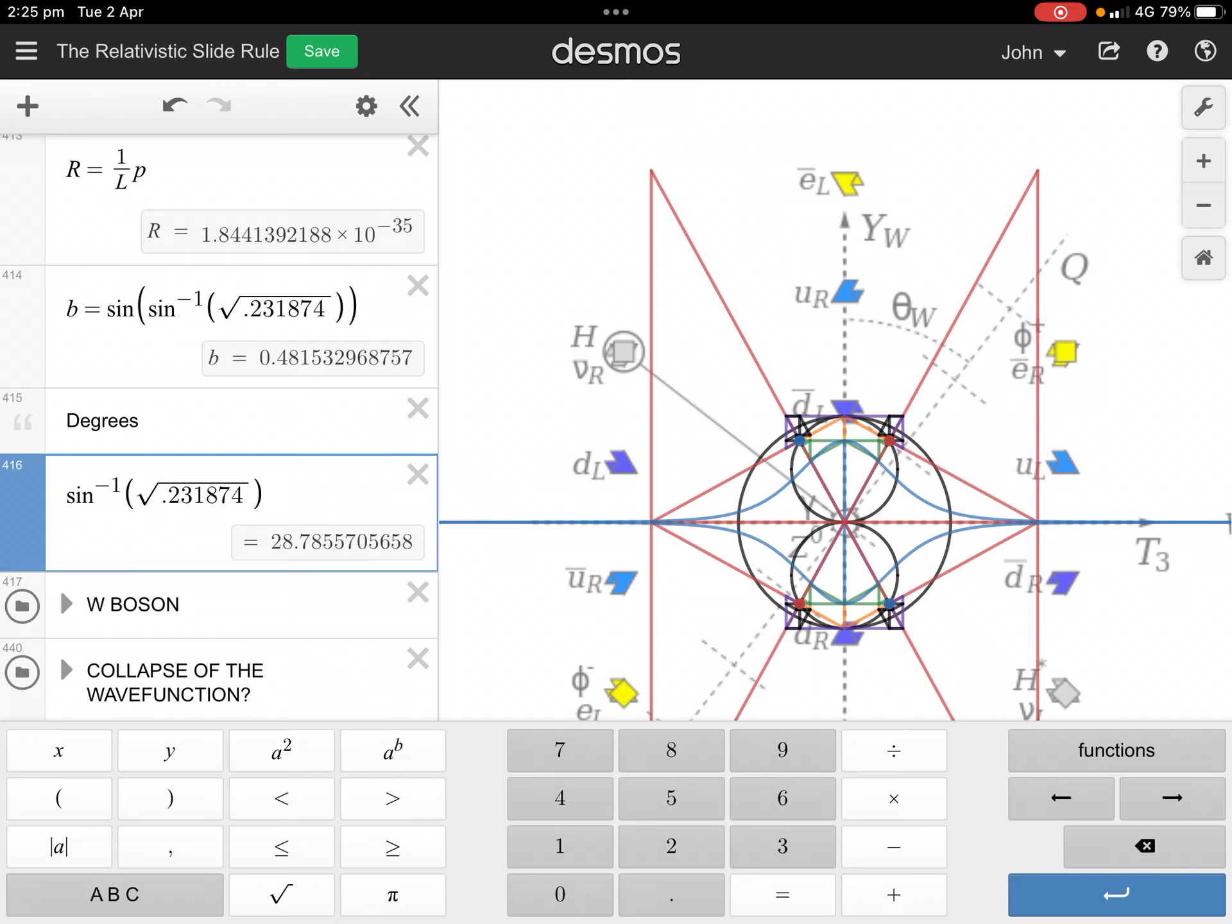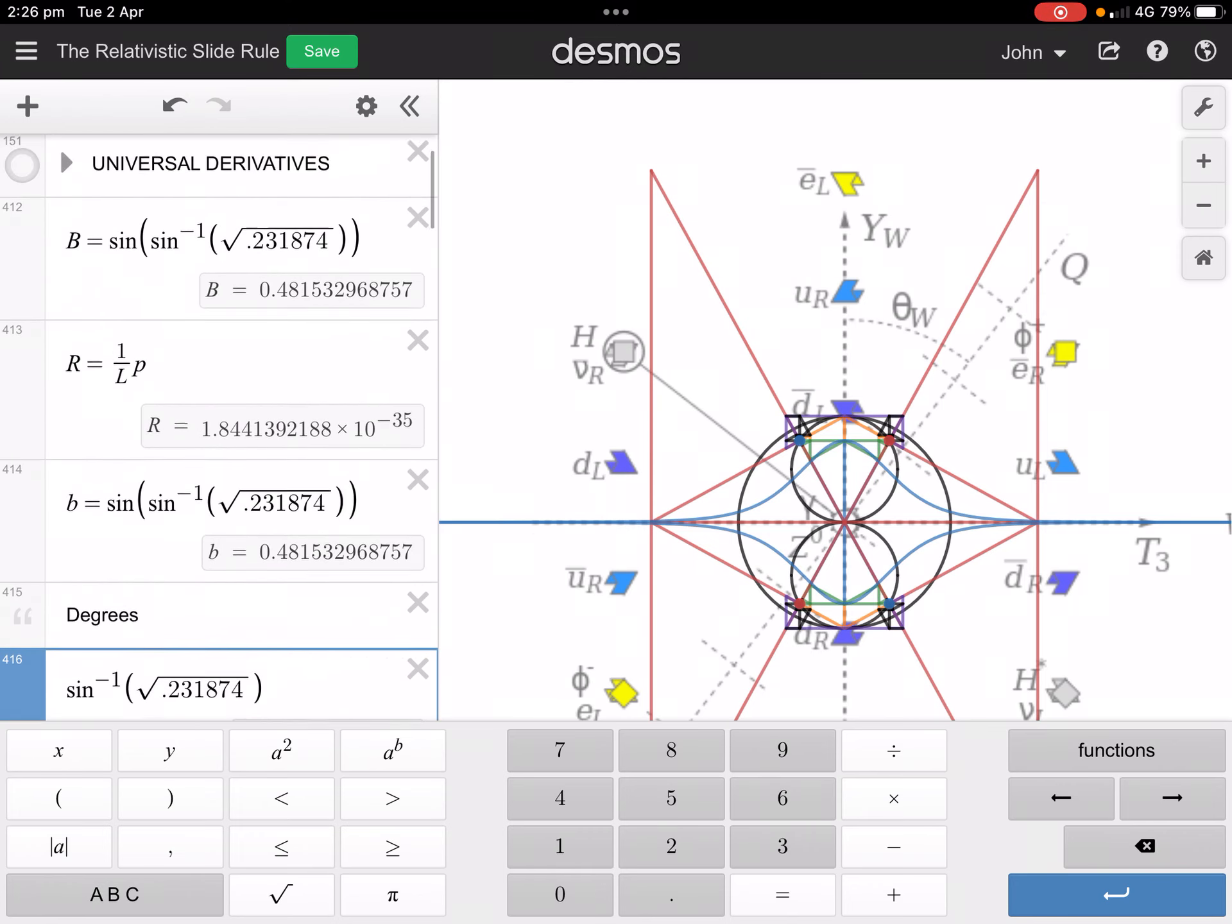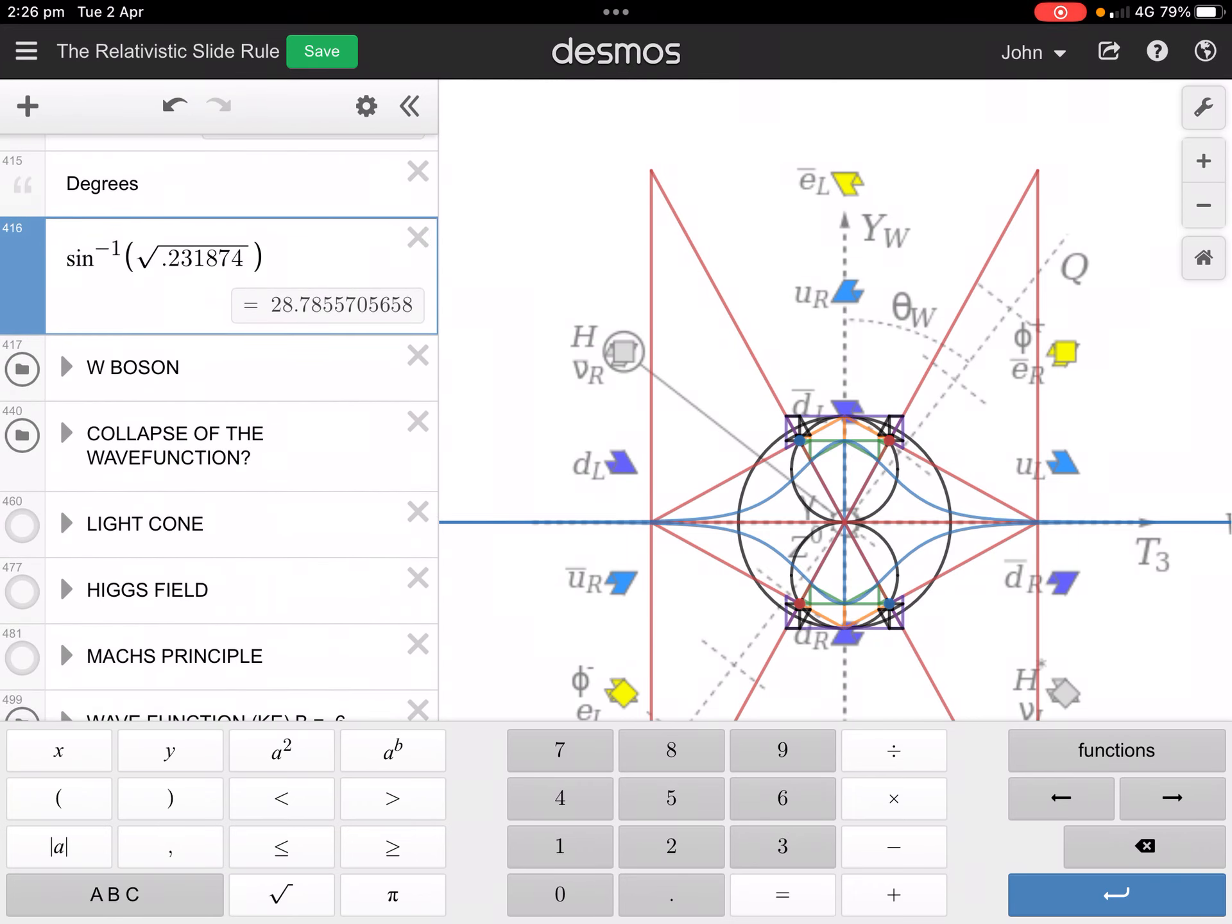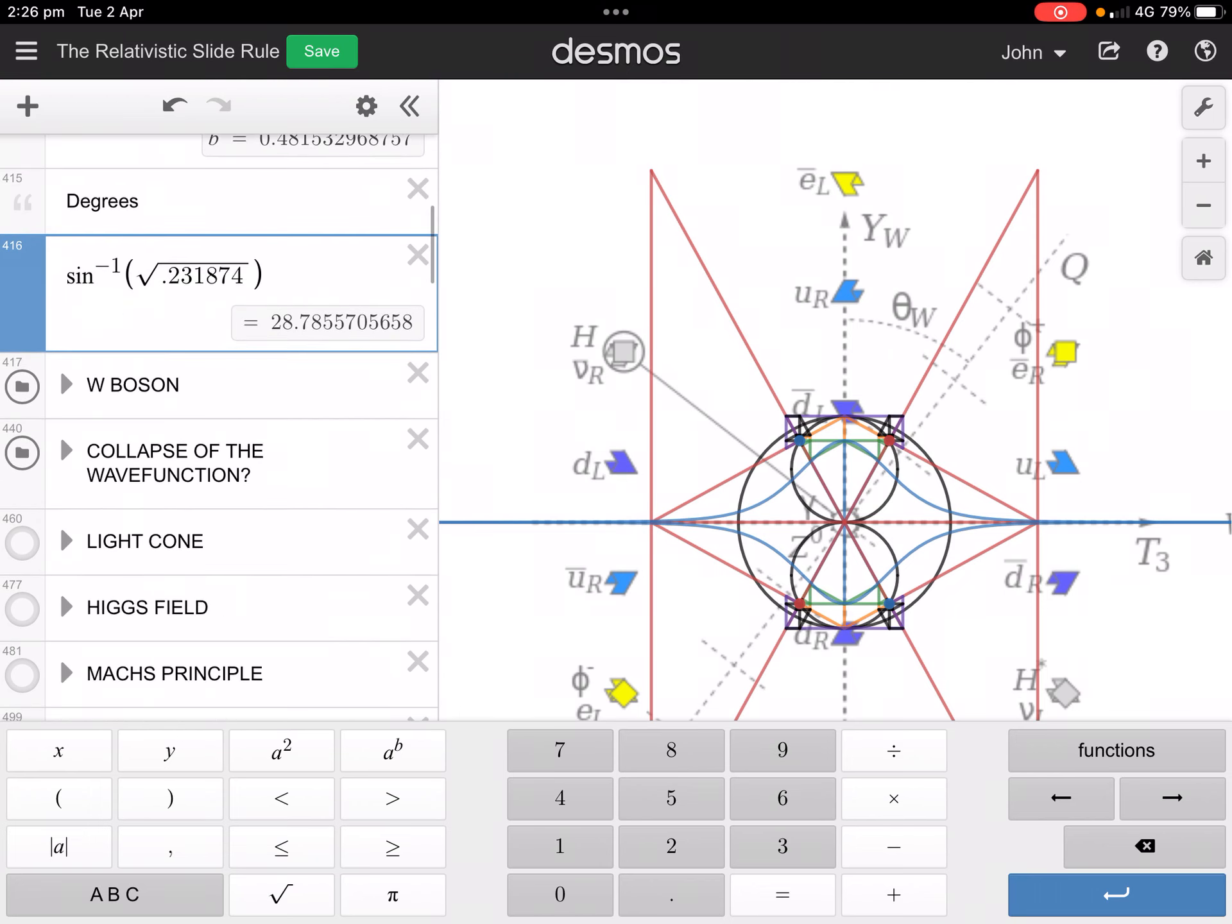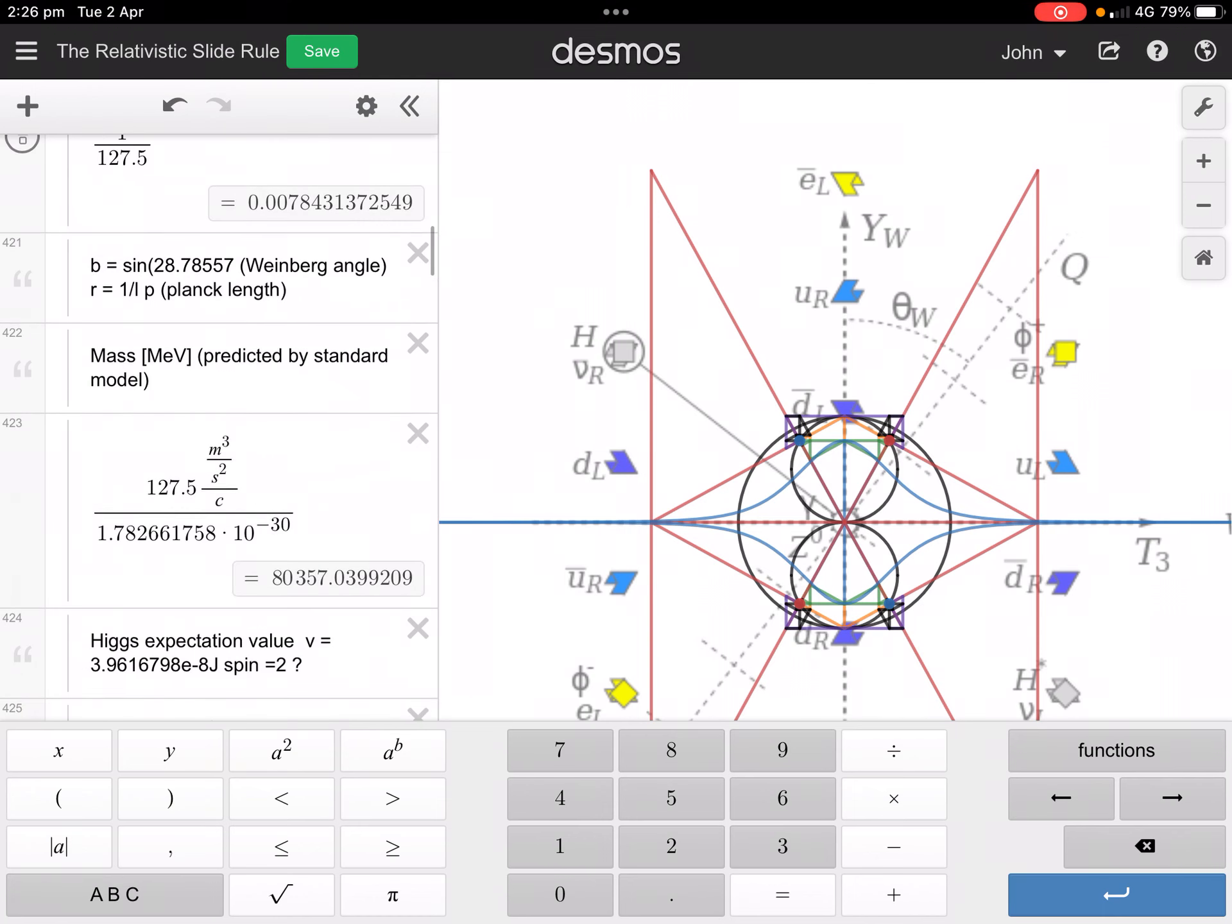Which is the Weinberg angle, and that now it's within the range. So more recently there was an experiment where they came up with a slightly higher value for the W boson, more like 80,433.